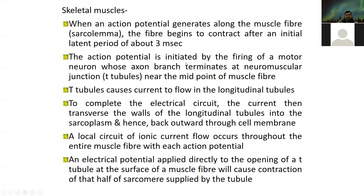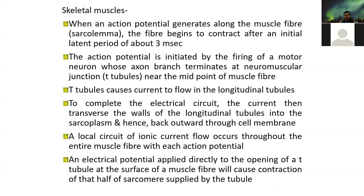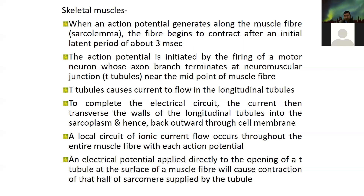The action potential is initiated by the firing of a motor neuron whose axon branches terminate at the neuromuscular junction. T-tubules are between two muscle fibers at the neuromuscular junction — transverse tubules. The current stimulus generated will flow towards the longitudinal tubules, causing contraction of the muscle fibers, leading to each and every muscle fiber — the whole muscle is activated.